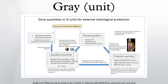The absorbed dose also plays an important role in radiation protection, as it is the starting point for calculating the stochastic effect of low levels of radiation. The stochastic health risk for radiation protection dose assessment is defined as the probability of cancer induction and genetic damage. The gray measures the absorbed energy of radiation, but the stochastic biological effects vary by the type and energy of the radiation and the tissues involved. This stochastic risk is expressed by the sievert, which has the same dimensions as the gray, and is related to the gray by weighting factors described in the articles on equivalent dose and effective dose.